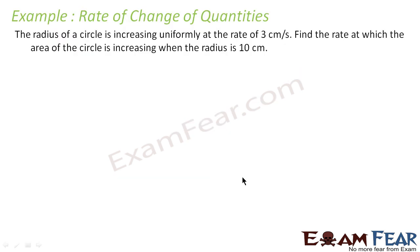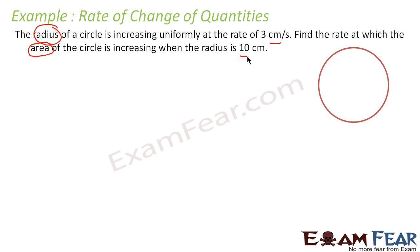Let's take one more example. The question says: the radius of a circle is increasing uniformly at the rate of 3 centimeters per second. We need to find the rate at which the area of the circle is increasing when the radius is 10 centimeters.